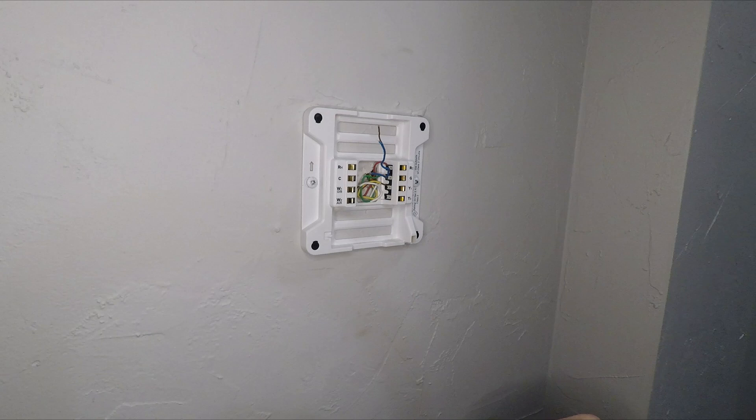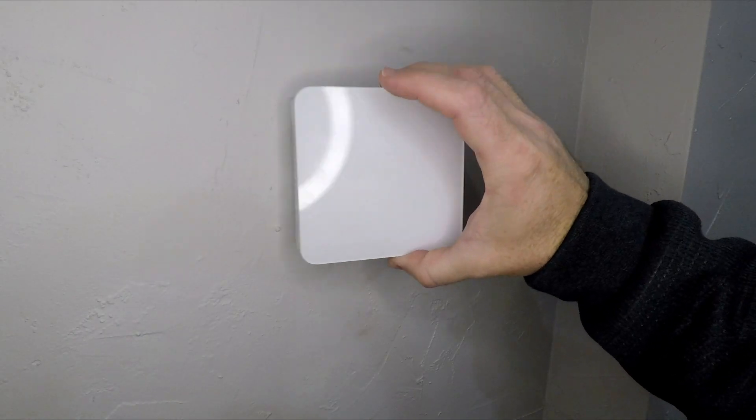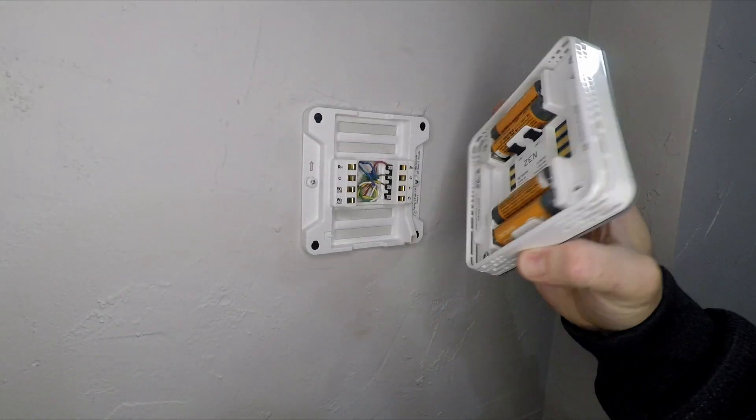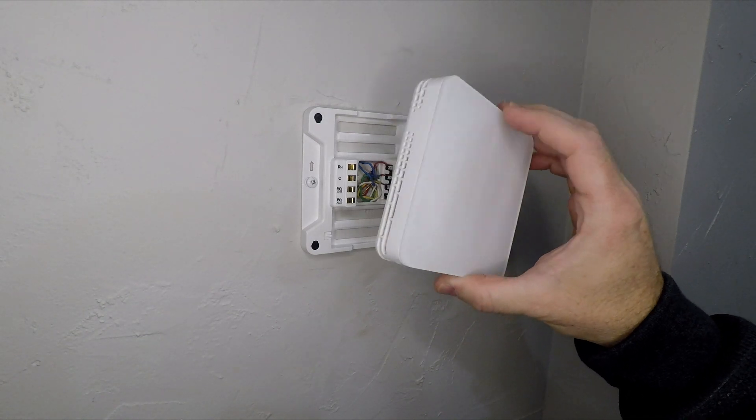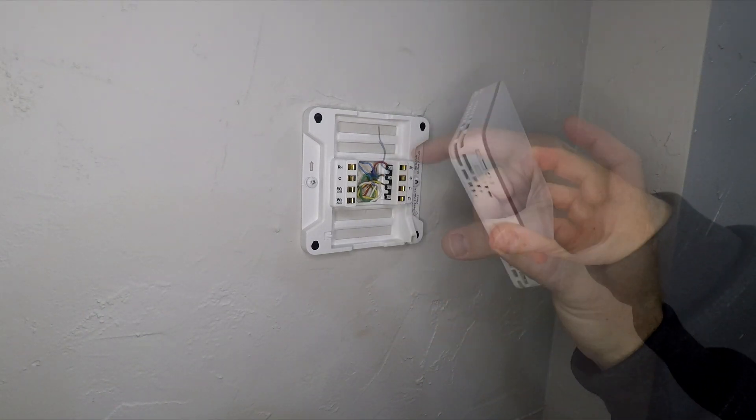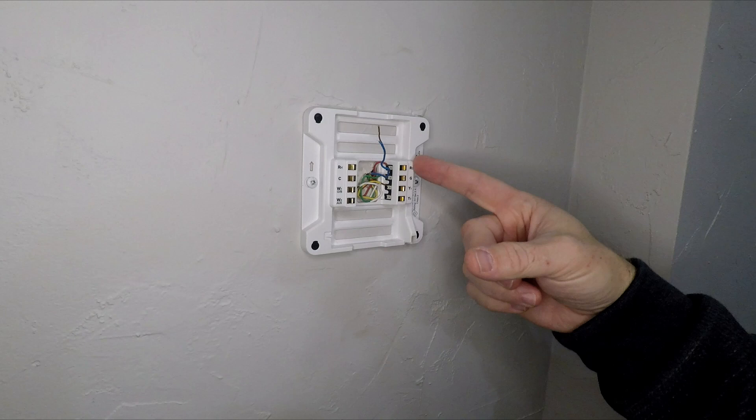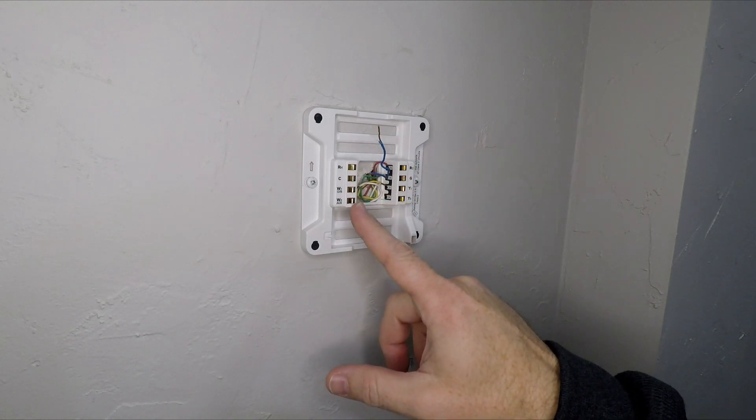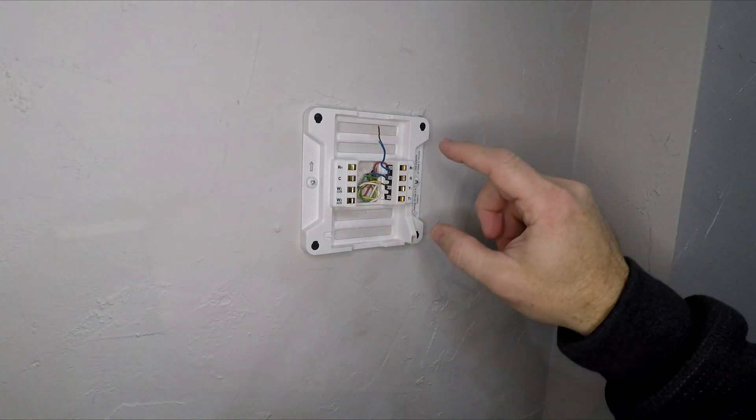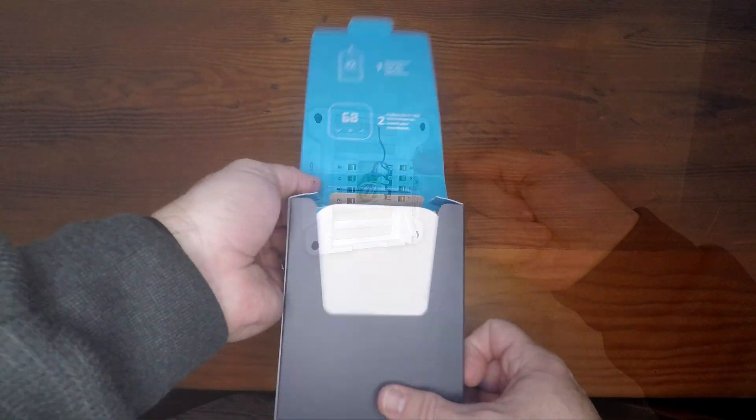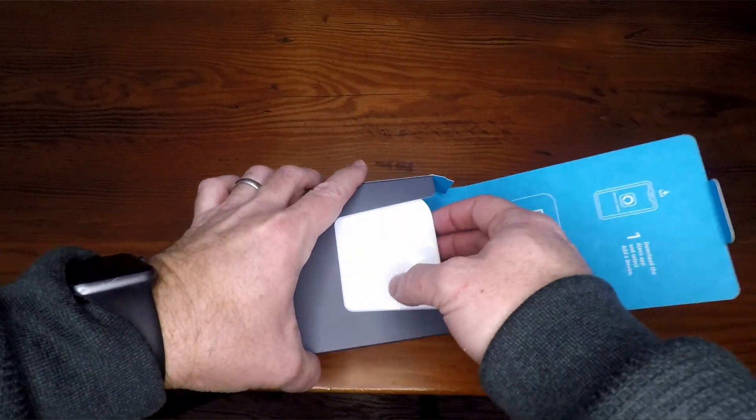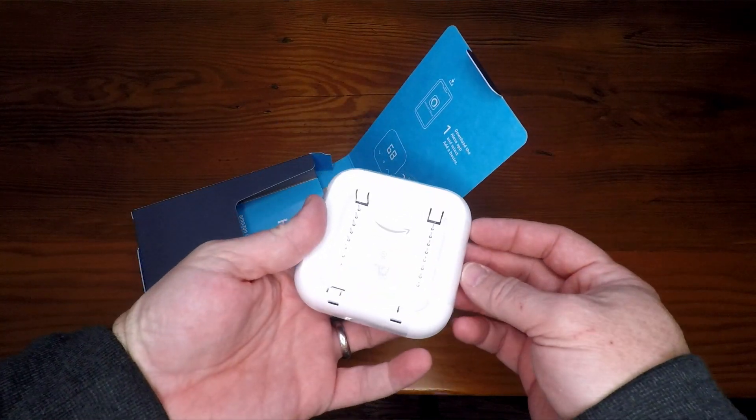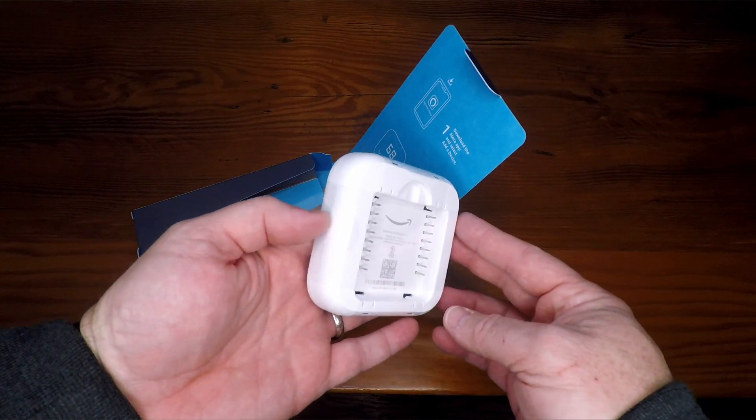But without that, the batteries, four double-A batteries, would die within two months, maybe because you use battery power to connect to WiFi and maintain that connection and all of that stuff. So we got one of these Amazon smart thermostats on sale on Amazon on a Black Friday or something like that.